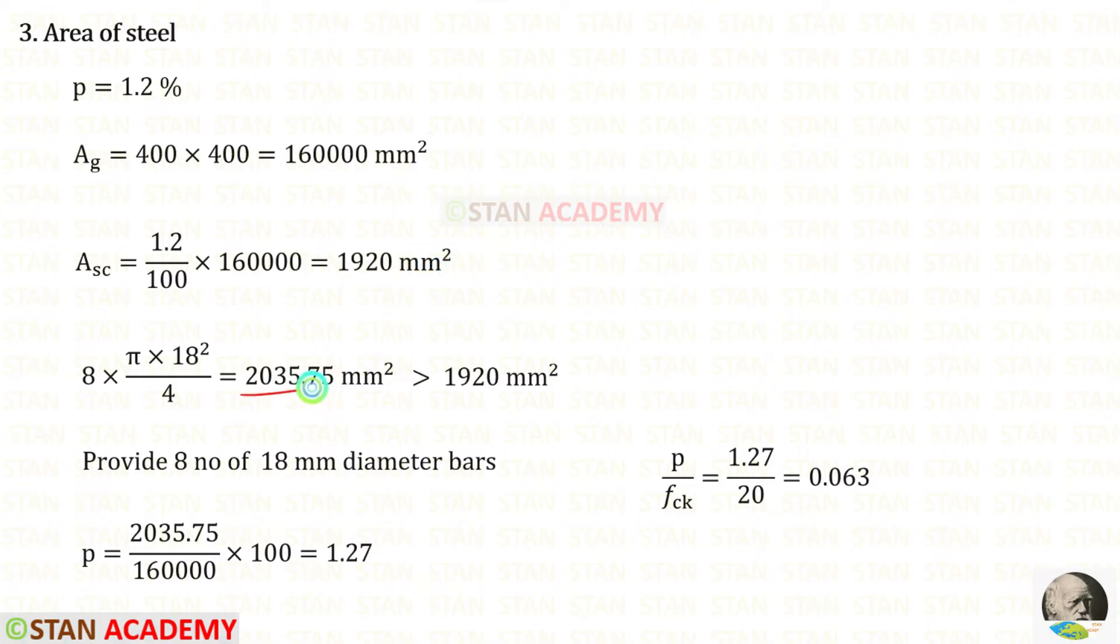The provided area is different from the required area. So the value of P will change. Let us find that. The provided area upon the gross area into 100, we will get the correct percent, which is 1.27. So P upon FCK will be 0.063.